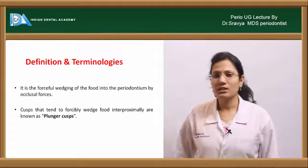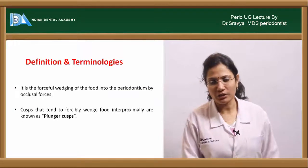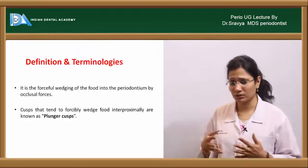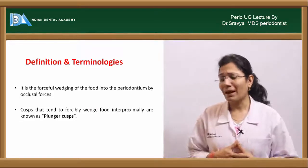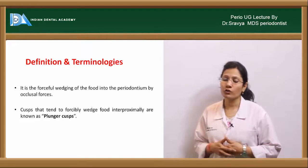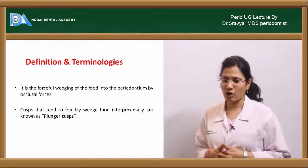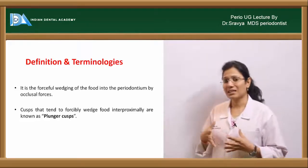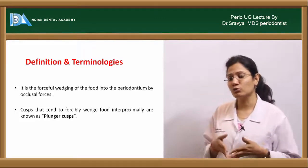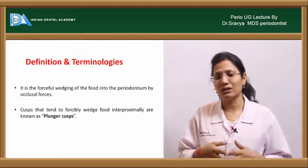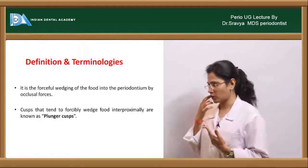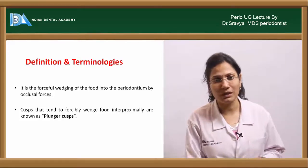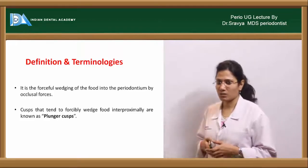Food impaction. What is food impaction? Food impaction is defined as a forceful wedging of food into the periodontium by occlusal forces. The cusps that tend to forcefully wedge the food interproximately into the interdental areas of the periodontium are termed as plunger cusps.